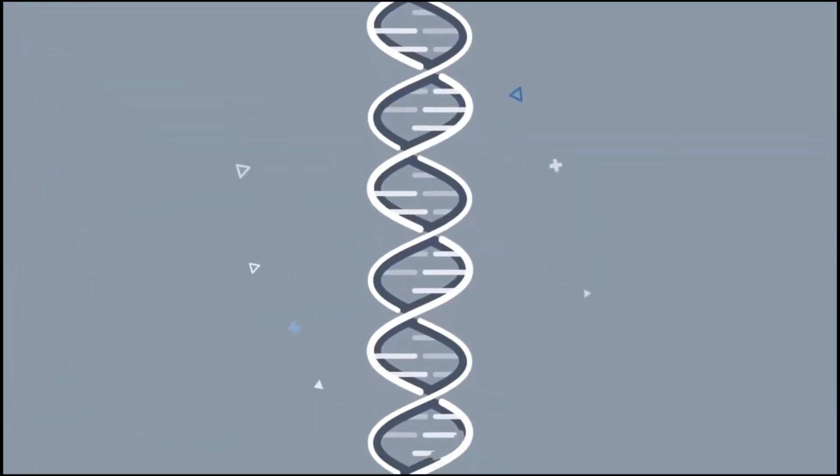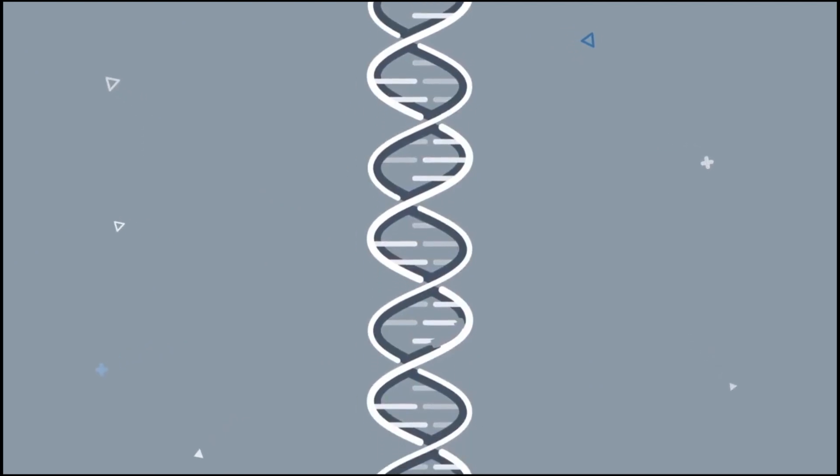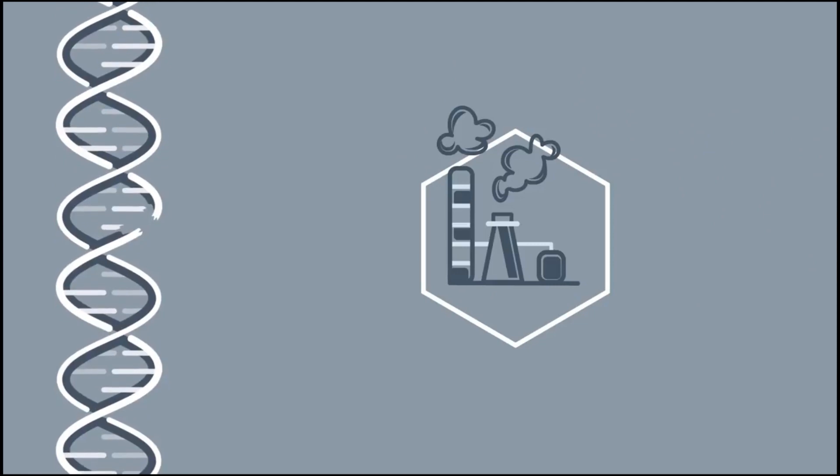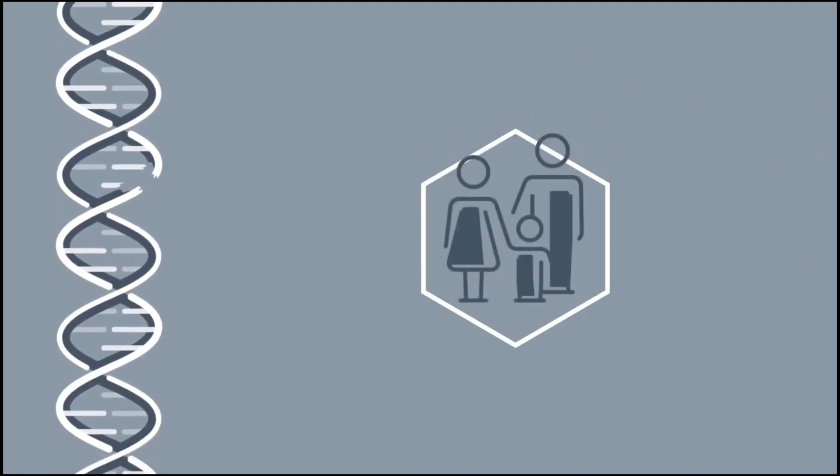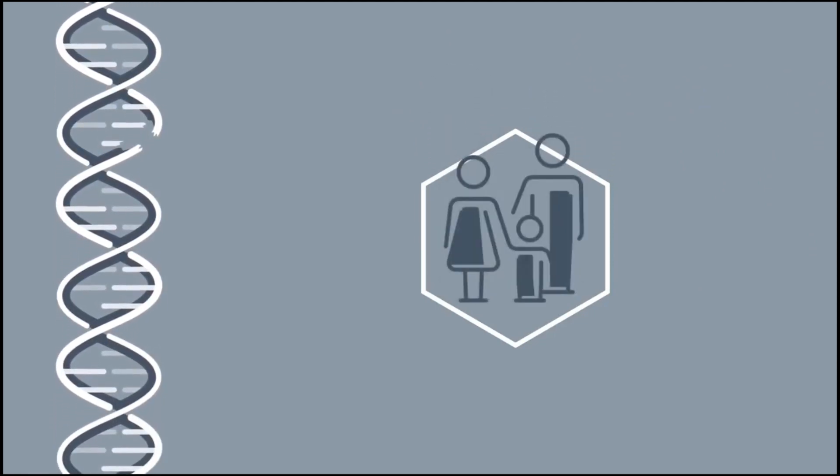Occasionally, the DNA instruction manual in a cell can get damaged or mutated. The cause of this mutation could be a chemical or environmental carcinogen. You might even have a hereditary risk for cancer. Other times, the cause is unknown.